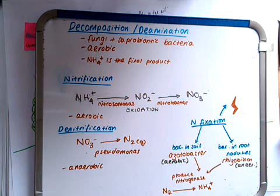And then nitrification occurs, where ammonium is converted by nitrosomonas bacteria through an oxidation reaction to nitrites. And then these nitrites are converted via nitrobacter, which is also an aerobic bacteria, to nitrates. And this is another oxidation reaction.